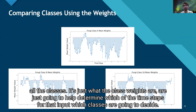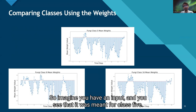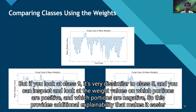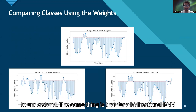Class five and class nine had a very negative cosine similarity. In the NeuroView construction, the concatenation of the hidden states is the same for all classes — it's the class weights that determine which class wins for a given input. So if an input belongs to class five, you can see why it might be misclassified as class 16 based on the weight values, and conversely why class nine is very dissimilar. This provides additional explainability that makes the model easier to understand.